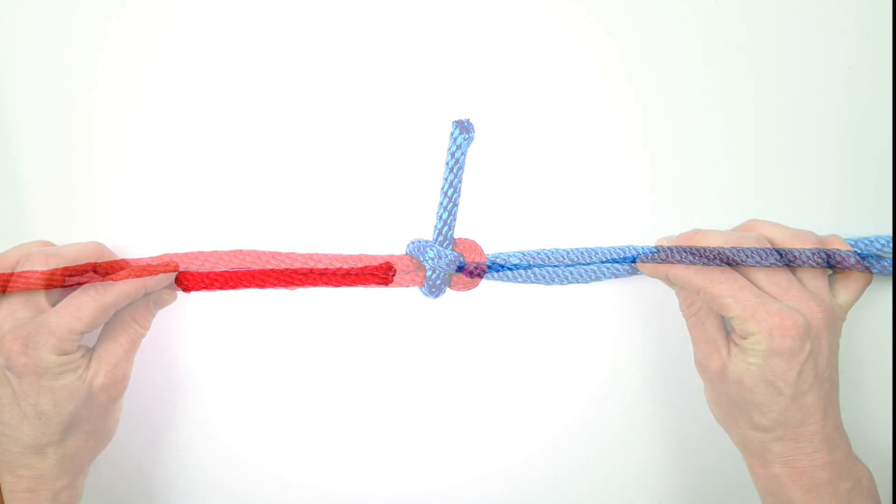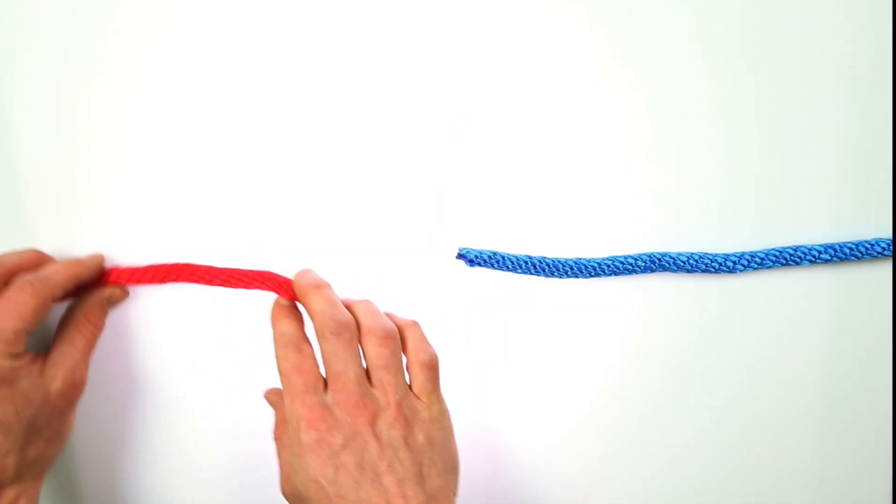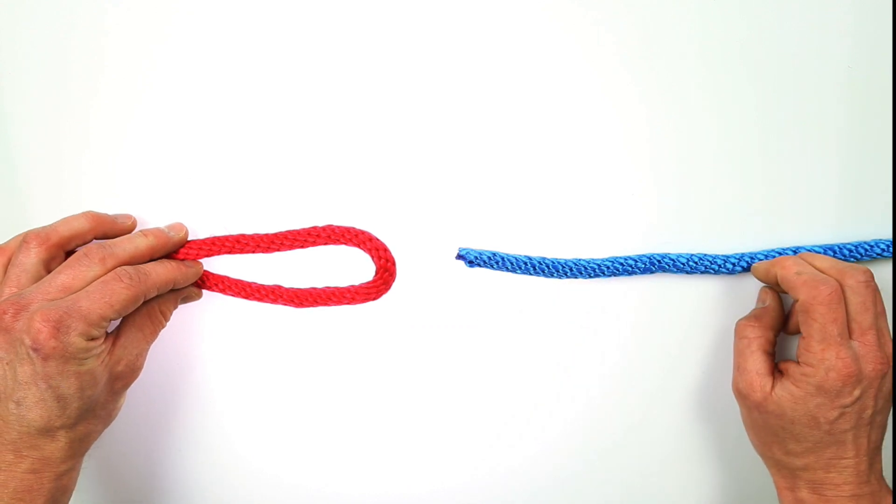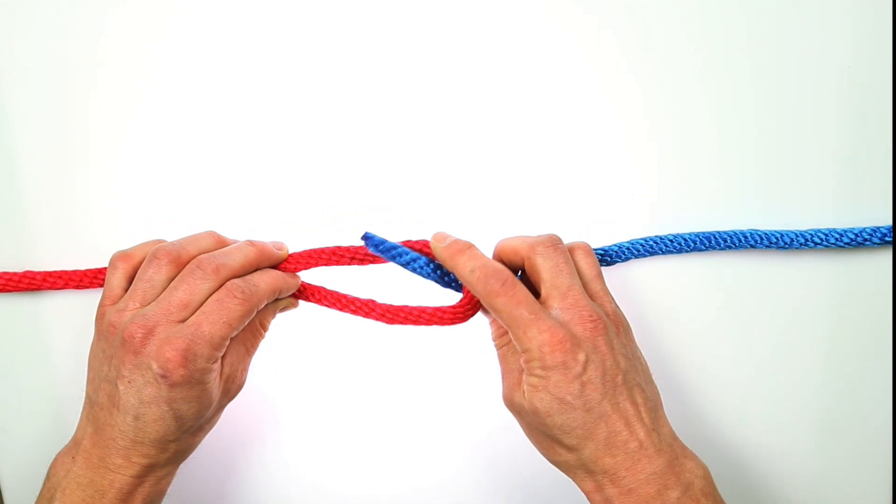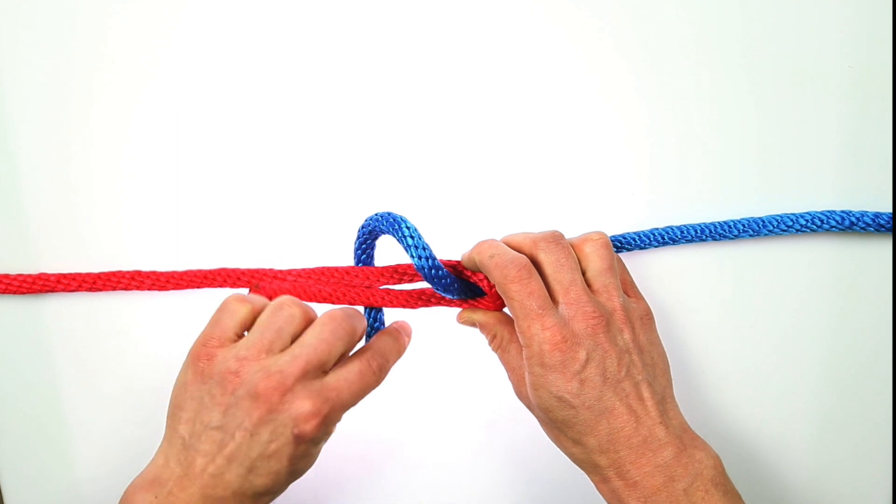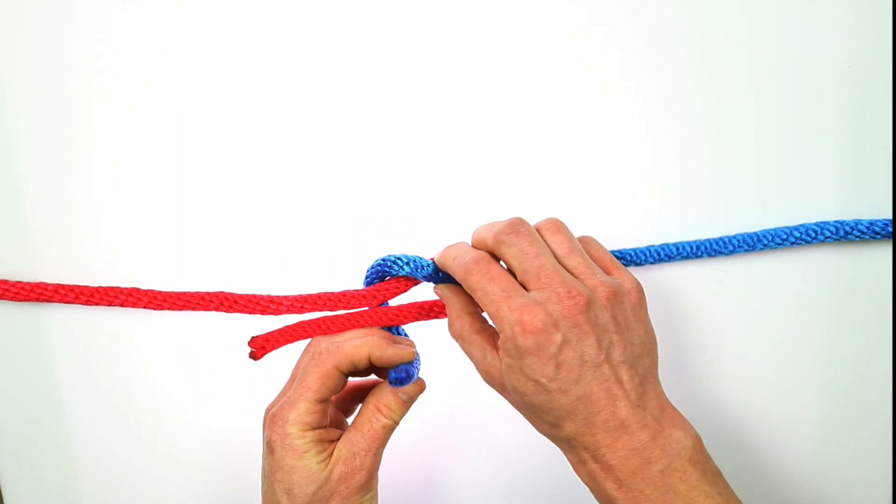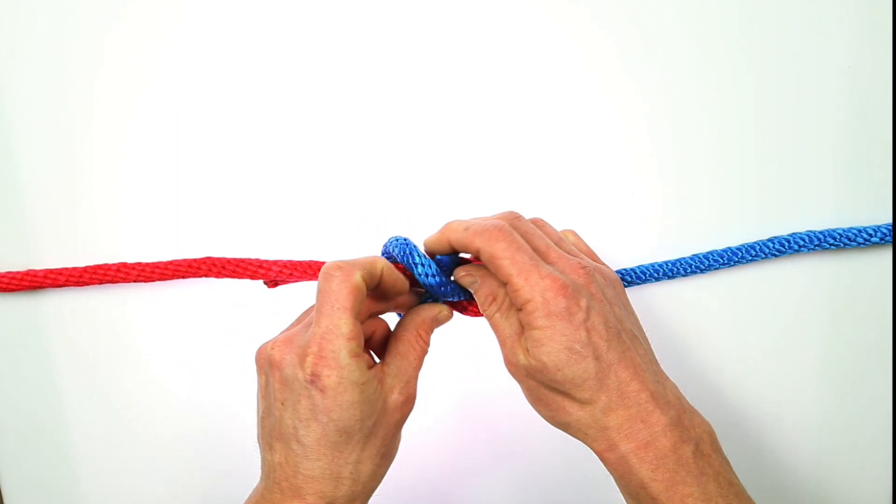First, make a bend with this in your thicker rope. Then take your second rope through the loop, up and around the whole loop, and finally back under itself here. There you go, sheet bend.